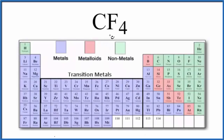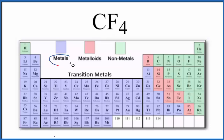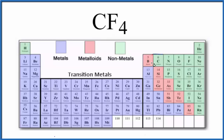The question is whether CF4, carbon tetrafluoride, is ionic or covalent. Looking at the periodic table, which is divided into metals, metalloids, and nonmetals, we can find carbon right here — that's a nonmetal. And then fluorine right over here, also a nonmetal. When we have two nonmetals, we have a covalent compound, also called a molecular compound.